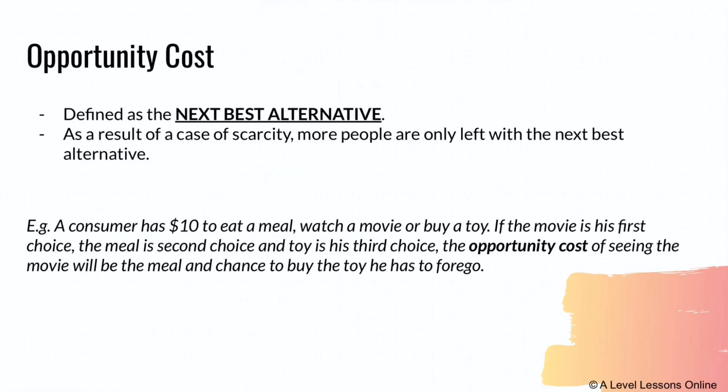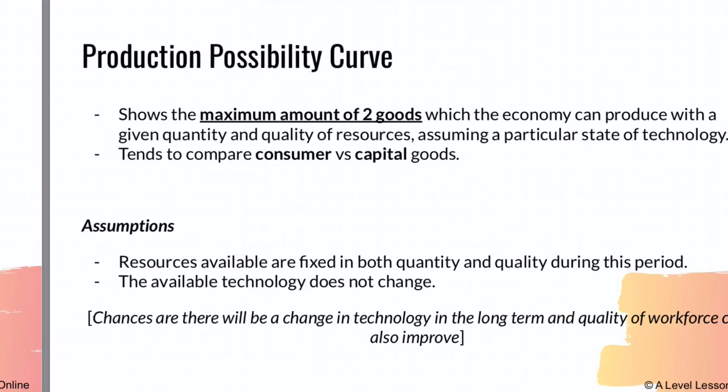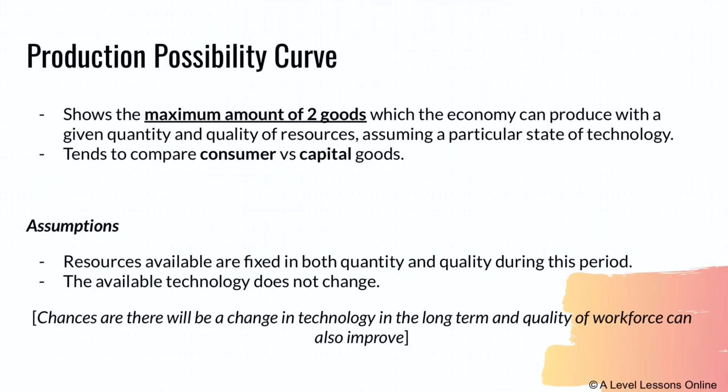Here's an example: a consumer has ten dollars to either eat a meal, watch a movie, or buy a toy. If the movie is his first choice, the meal is second, and the toy is third, the opportunity cost of seeing the movie is the meal and toy he has to forgo. He can only choose one because time is also a scarce resource — he can't be at all three places at once.